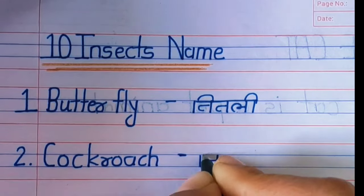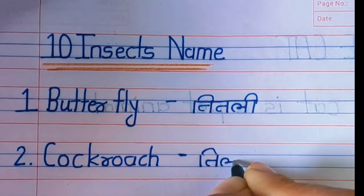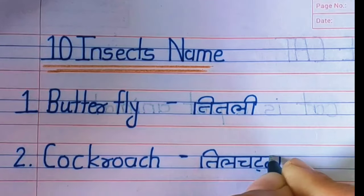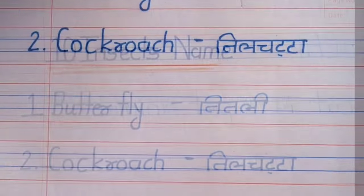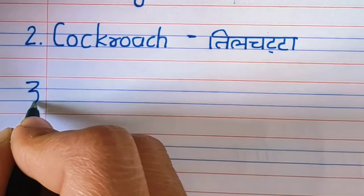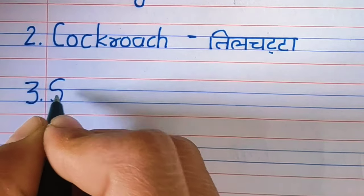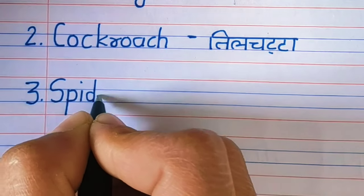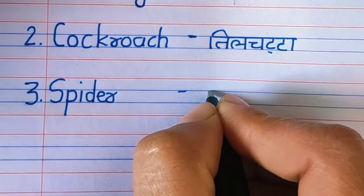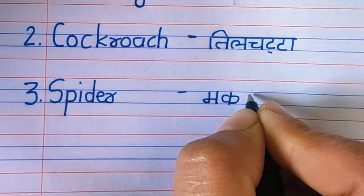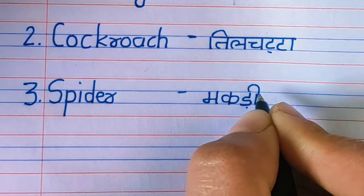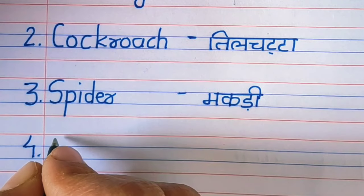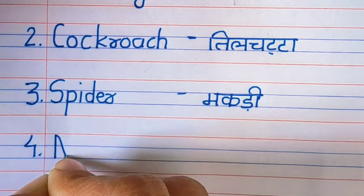Second: cockroach, C O C K R O A C H. Cockroach means teal chatta. Third: spider, S P I D E R.